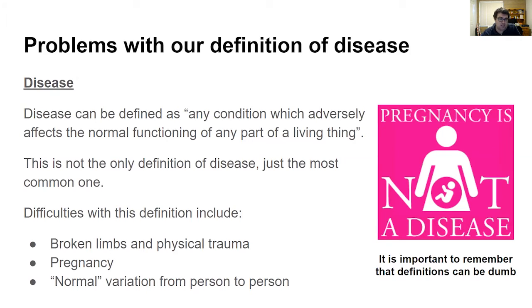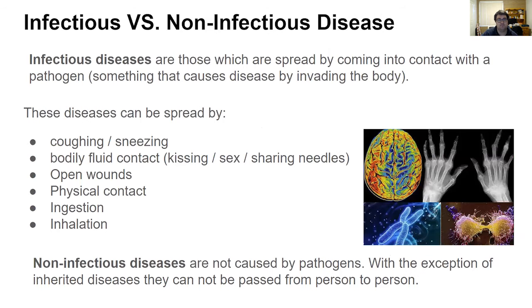So we can see here that just trying to define disease as one thing, our definition has these exceptions. It's something we have to live with and be mindful of, making sure we go into detail and be specific when we talk about the types of disease we're actually discussing. In saying this, we need to introduce a couple of new definitions — those are infectious and non-infectious disease.